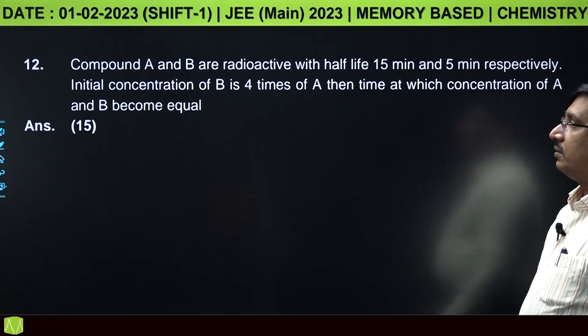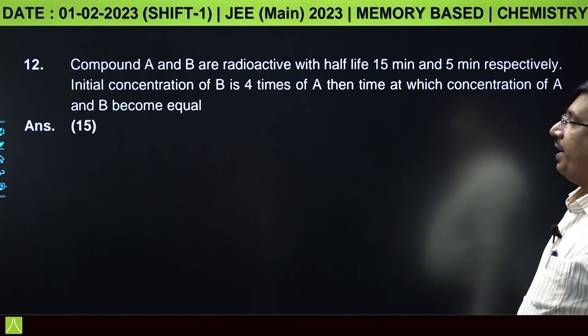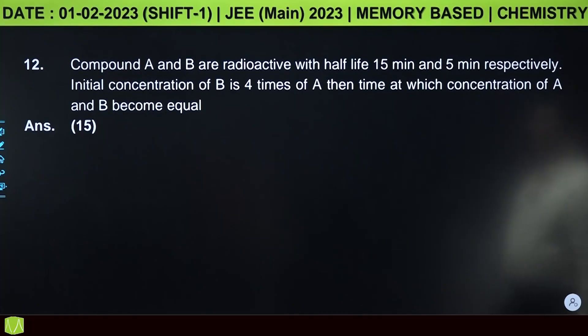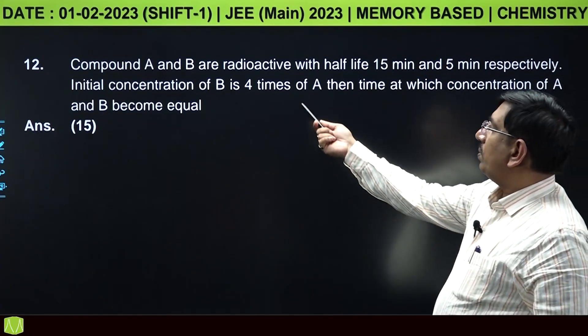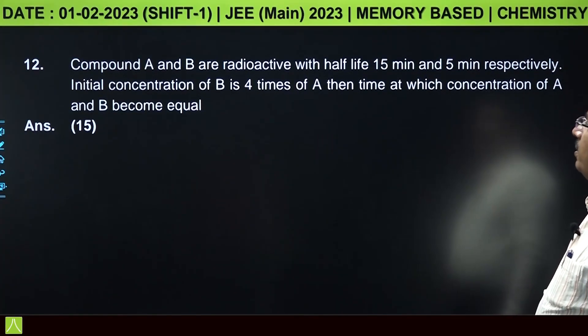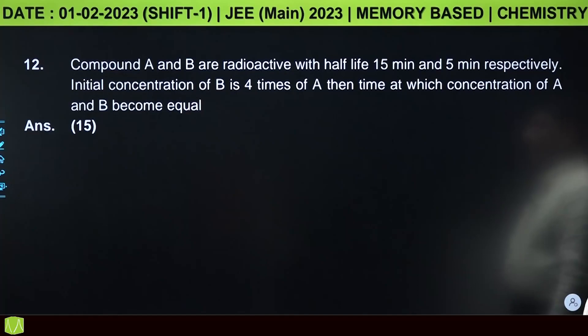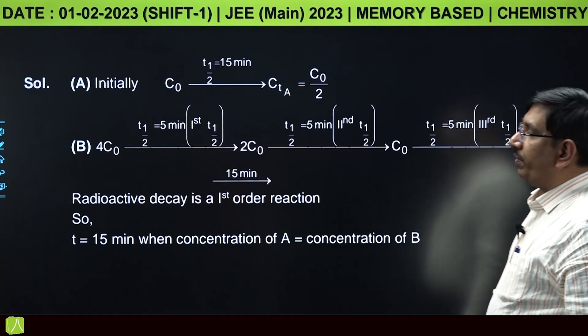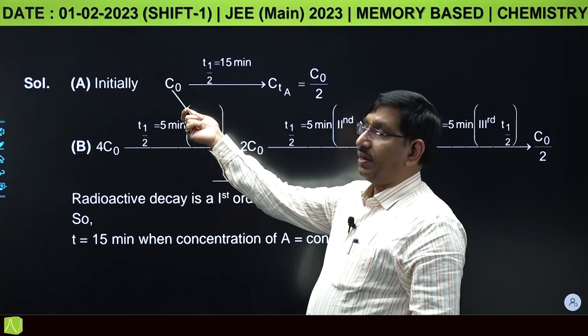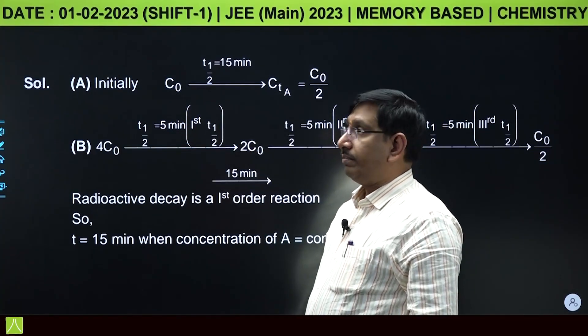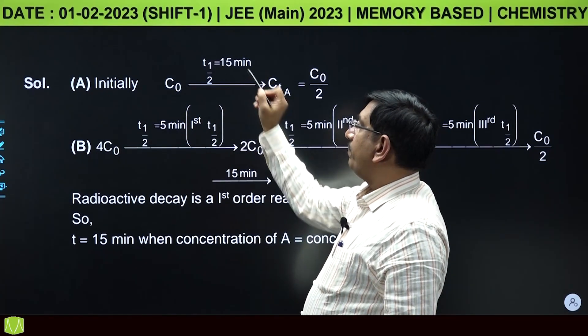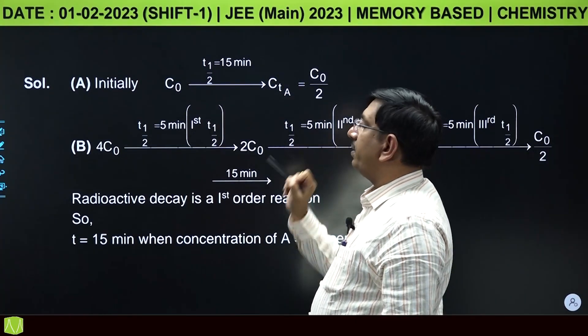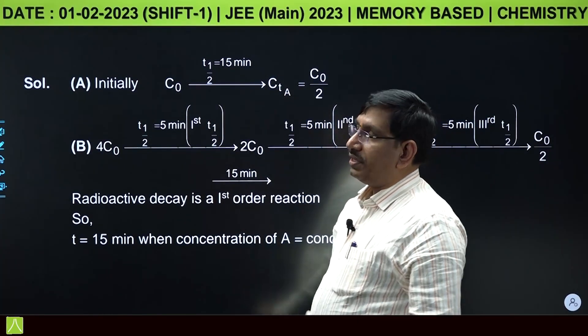From chemical kinetics: compounds A and B are radioactive with half lives 15 minutes and 5 minutes respectively. Initial concentration of B is 4 times of A. Find time at which concentrations of A and B become equal.